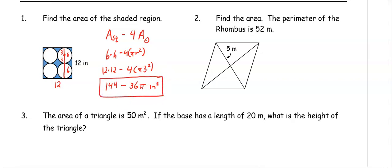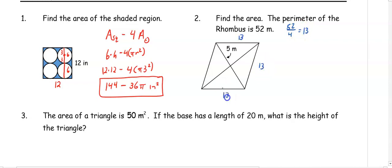In number two, find the area of the rhombus if the perimeter is 52. So if the perimeter of the rhombus is 52, we can take 52 and divide by four, so each side of the rhombus has to be 13. That will help us get our diagonals. We already know one diagonal is bisected into five and five, so it has a length of 10. We need to find the other diagonal.